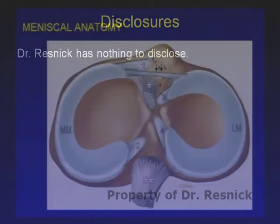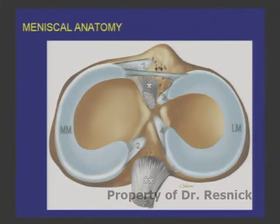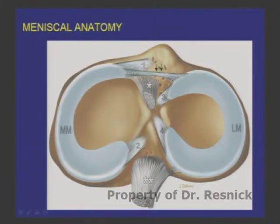We have to start at the beginning with general anatomy. This is a beautiful illustration that Dr. Beltran made for me about ten years ago. You're the femur, looking down at the top of the tibia. You see the medial meniscus on your left, the lateral meniscus on your right. They are not the same shape — the lateral meniscus is more circular, covering more of the lateral tibial plateau. You can also see the anterior transverse meniscal ligament, which connects the menisci — a common finding.